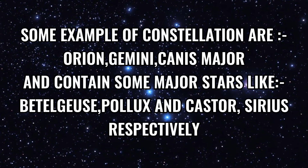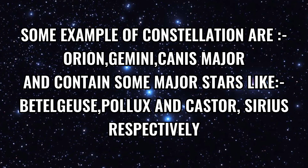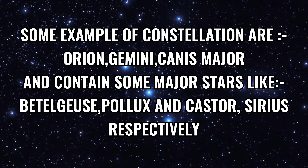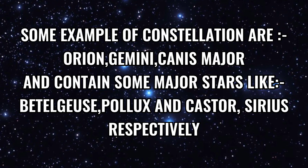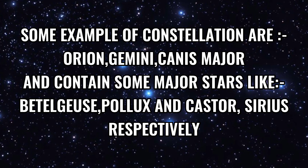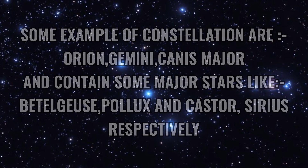Some examples of constellations are Orion, Gemini, and Canis Major, containing some major stars like Betelgeuse, Pollux and Castor, and Sirius respectively.